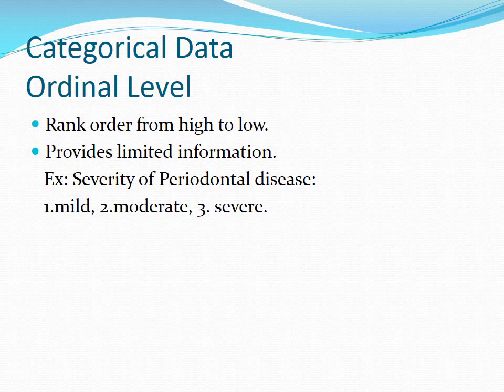The next area of categorical data is ordinal level. Within the ordinal level of data, we can now begin to rank the data from high to low. This type of categorical data provides limited information, and for this reason researchers do not like to use it as a measurement tool. An example for dental hygiene students is the severity of periodontal disease. If a patient has been diagnosed with periodontal disease, dentists and hygienists will classify the level as 1 being mild, 2 being moderate, and 3 being severe. We can rank the disease, but it does not tell us how mild is mild, and it's difficult to determine how much more moderate is than mild.